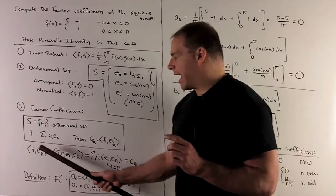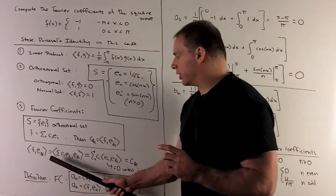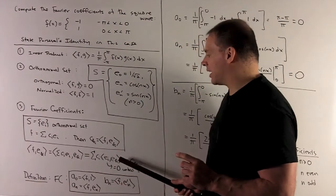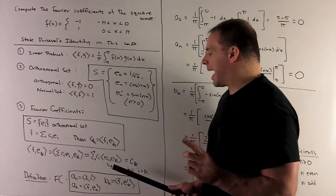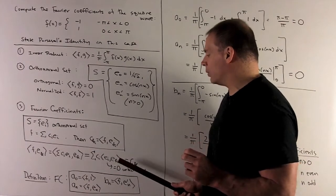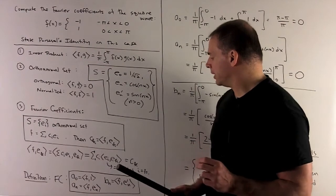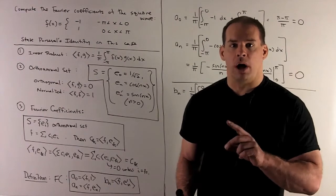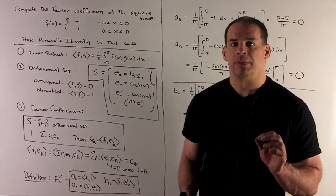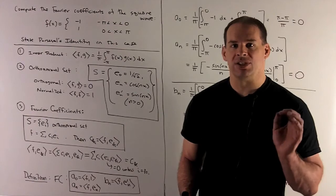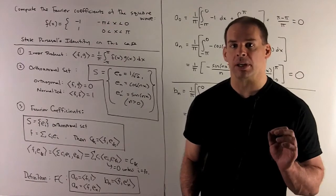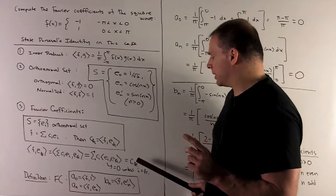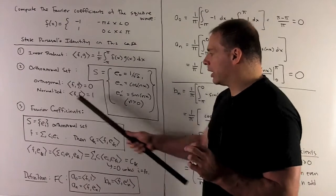This is just going to be properties of our orthonormal set. So I'll take f against e sub k, I'll write f as a linear combination, and then I can push the inner product to the inside of the sum. Then what happens? We have inner product of ei with e sub k. If i is equal to k, then we're going to get a one because of the unit vector property. If i is not equal to k, we get a zero because of the orthogonal property. So the only thing that can survive here is going to be c sub k. So that's how I get our result.